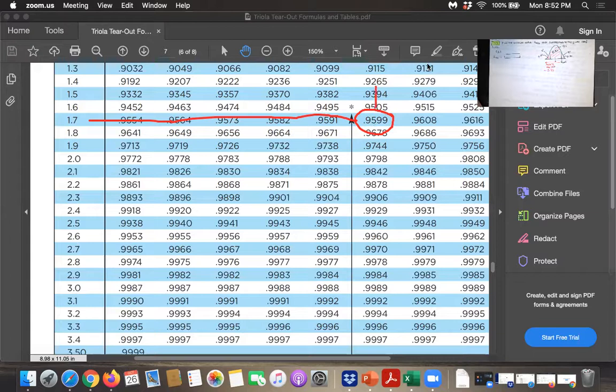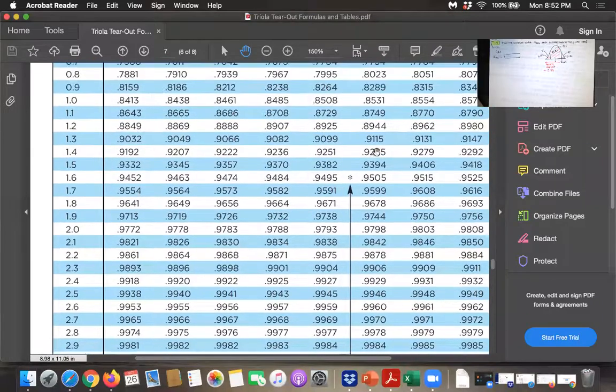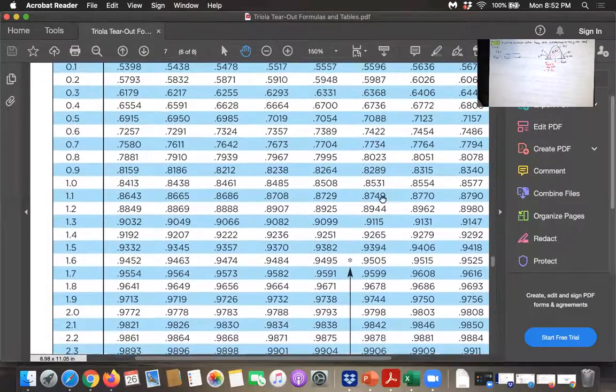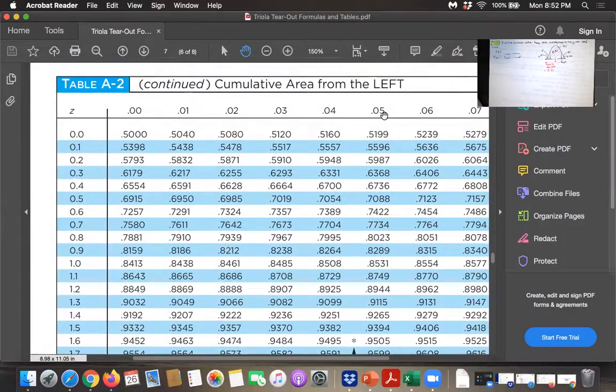And if I go up in my table. Hopefully I see that that is the column that corresponds to that hundredths place of 0.05. And it does. So according to table A2, this is approximately 1.75.